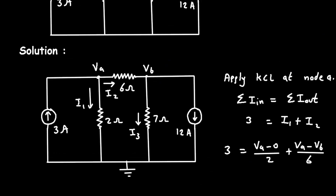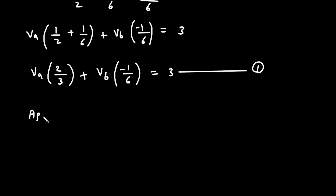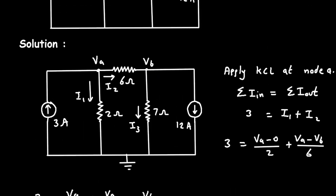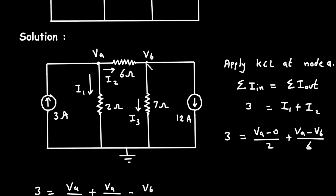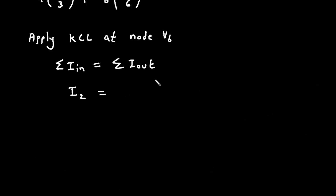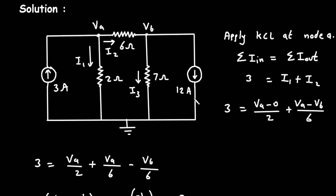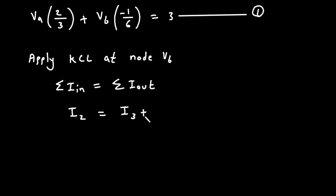Now similarly we will apply KCL at node VB. Apply KCL at node VB. Again, summation of all the currents entering a node is equal to summation of all the currents leaving the node. At this node VB, the entering current is I2. I3 and the 12 ampere source are leaving. So we write: I2 is equal to I3 plus 12.